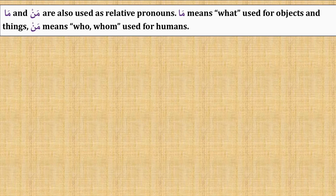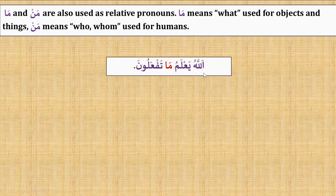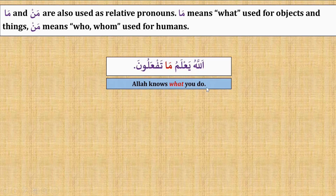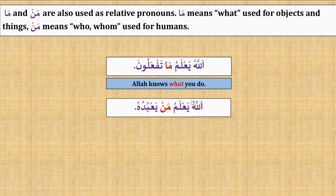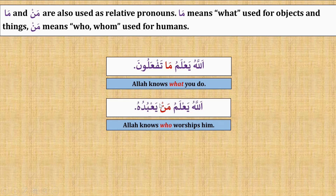Besides the relative pronouns mentioned in the table, there are two more: maa and man. Maa means 'what' and is used only for objects and things. Man means 'who' or 'whom' and is used for humans only. Example: Allahu ya'alamu maa taf'aloon — Allah knows what you do. Ya'alamu — knows; maa — what; taf'aloon — you do. Another example: Allahu ya'alamu man ya'buduhu — Allah knows who worships Him. That's all for today's lesson. See you next lesson inshallah. Wassalamu alaikum wa rahmatullahi wa barakatuh.